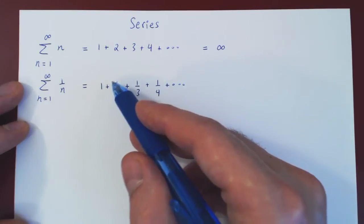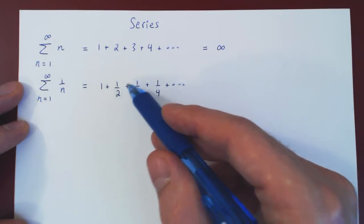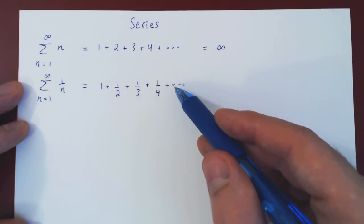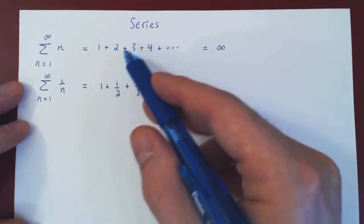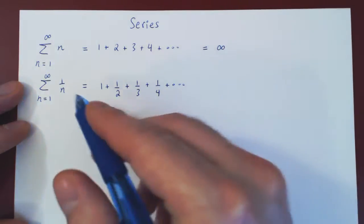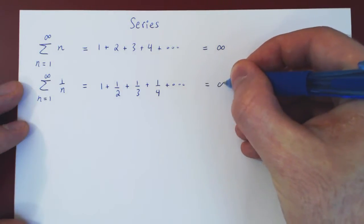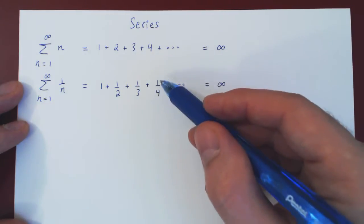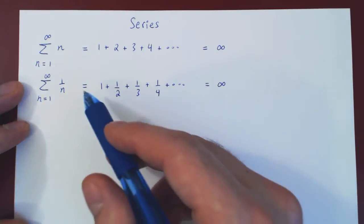What's interesting here is we're adding an infinite number of terms, but the terms are getting smaller and smaller. Every consecutive term is a little smaller than the previous one: plus 1 over 5, plus 1 over 6, plus 1 over 7. This series is not as obvious. But we have proved in a previous video, by comparing the series to the integral of 1 over x, that this actually also blows up to infinity. So this series diverges as well.